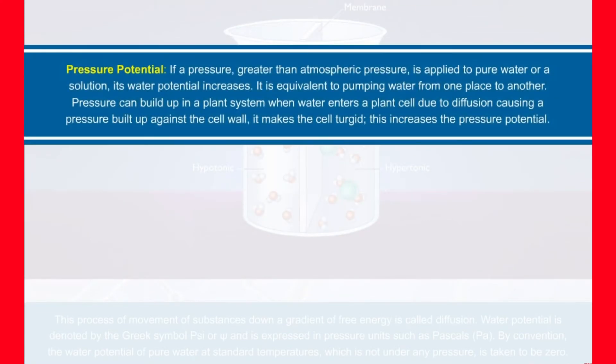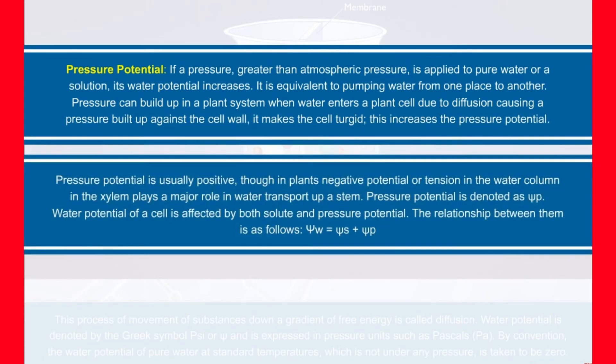Pressure Potential: If a pressure greater than atmospheric pressure is applied to pure water or a solution, its water potential increases. It is equivalent to pumping water from one place to another. Pressure can build up in a plant system when water enters a plant cell due to diffusion causing a pressure build up against the cell wall. It makes the cell turgid. This increases the pressure potential.